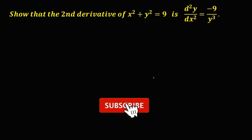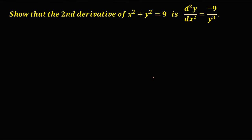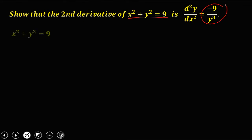Let's have this problem: show that the second derivative of x² + y² = 9 is negative 9 over y to the power 3.